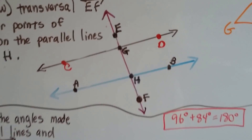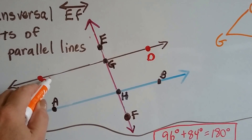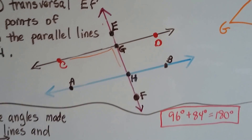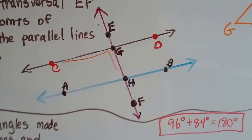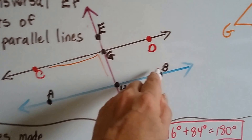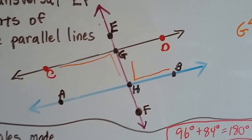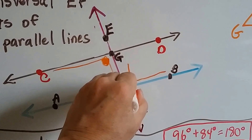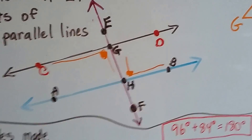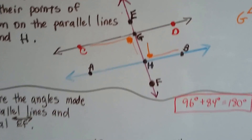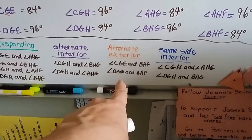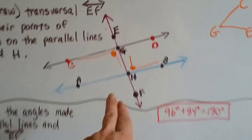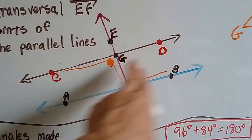How about alternate interior angles? CGH and BHG — see how CGH is an alternate interior angle to BHG. They're on the interior, on the inside of the parallel lines.